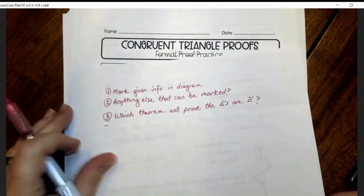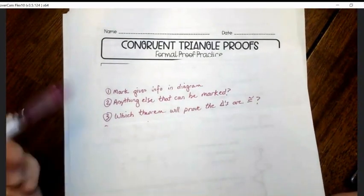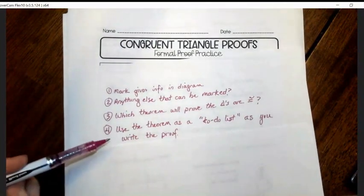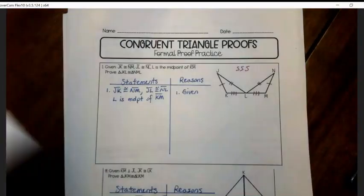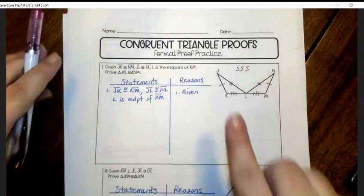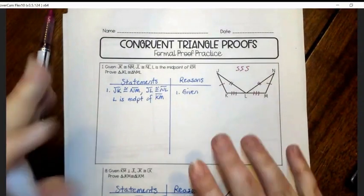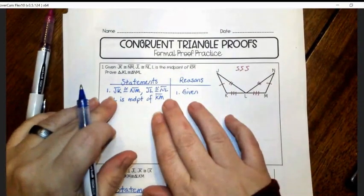Three was which theorem will you use to prove. That's side, side, side. And the last one was use the theorem as a to-do list as you write the proof.